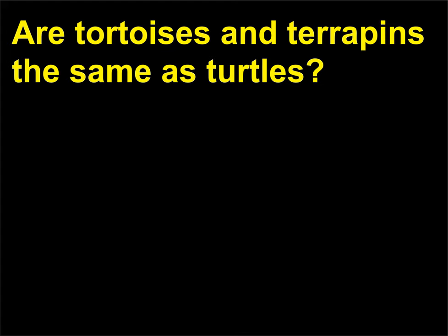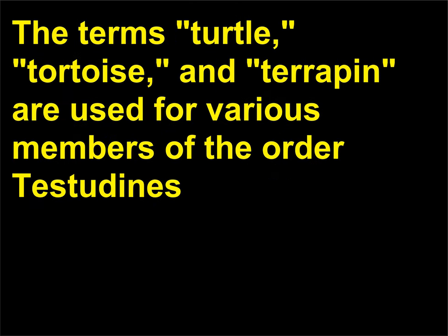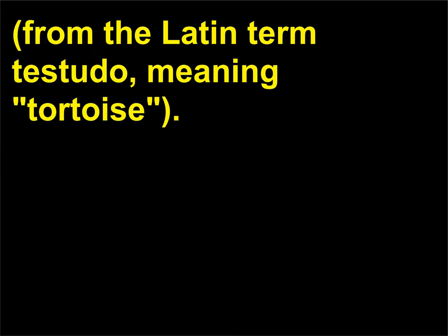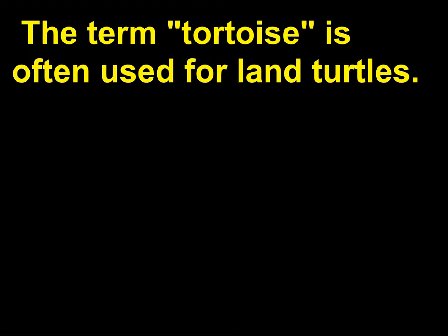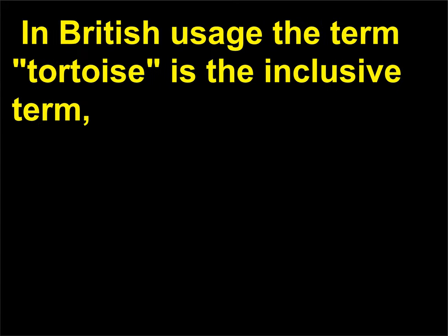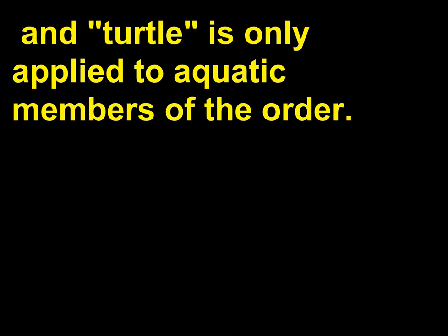Are tortoises and terrapins the same as turtles? The terms turtle, tortoise, and terrapin are used for various members of the order Testudinas, from the Latin term testudo, meaning tortoise. In North American usage they are all correctly called turtles, and the term tortoise is often used for land turtles. In British usage the term tortoise is the inclusive term, and turtle is only applied to aquatic members of the order.